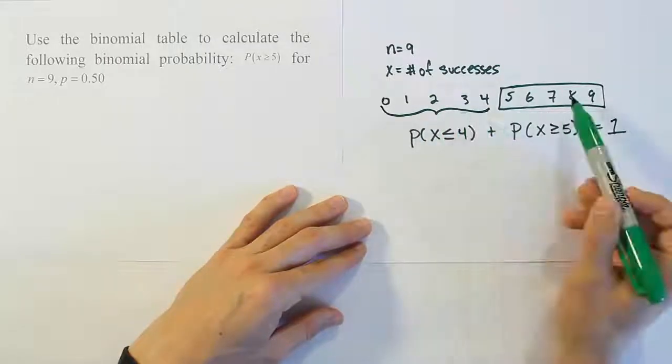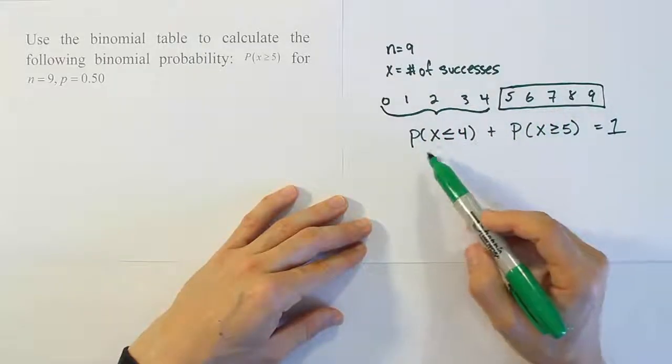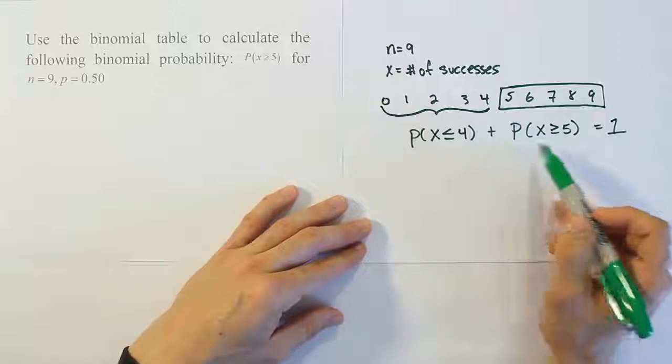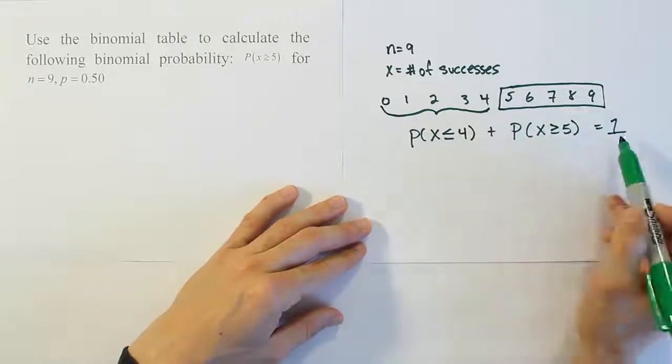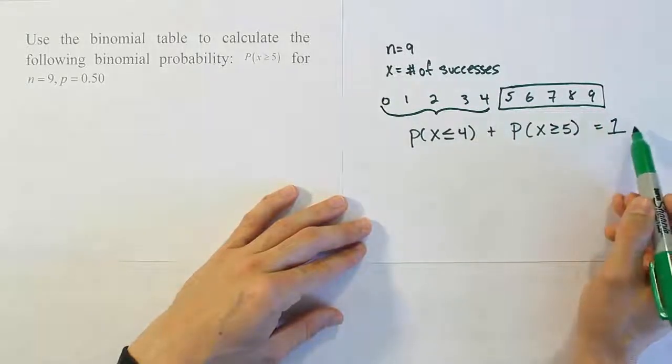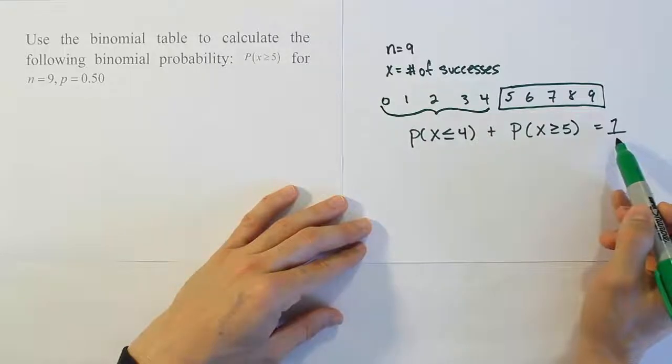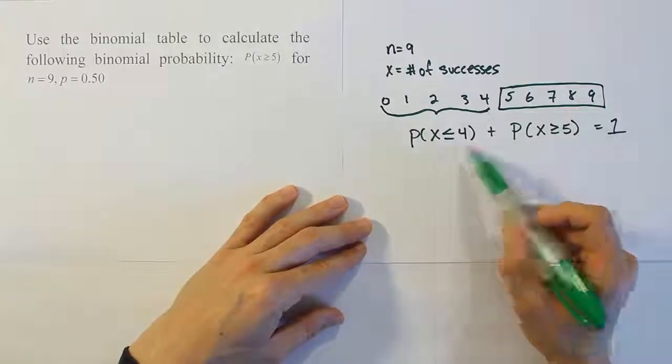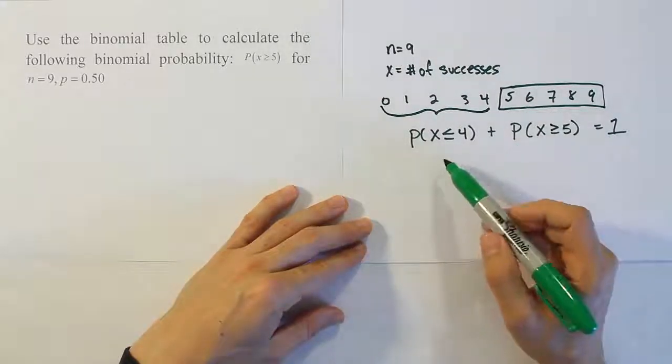You can be outside of this set, but that would mean you're in this one. So basically, if this is the probability that this set occurs plus the probability that that set occurs, it has to be equal to 100% of the probability, which is represented as a decimal as 1.